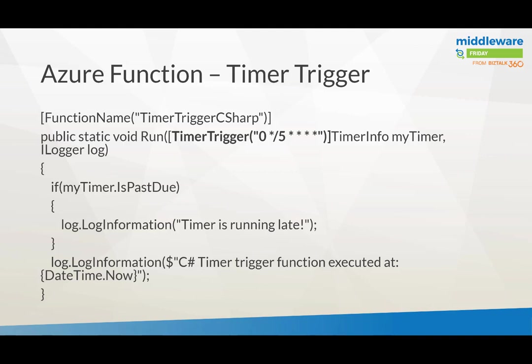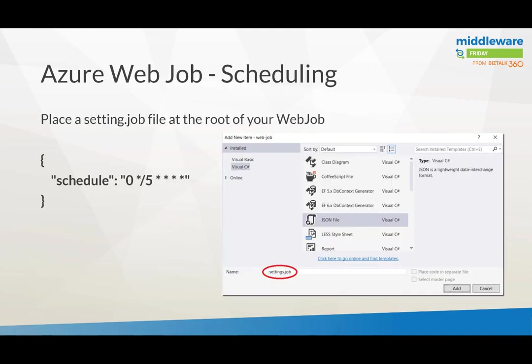In a Function, a timer trigger looks like this — within the brackets you specify the cron expression, and then that particular function will run on that schedule. Within a Web Job, you can also configure a cron expression. You add a file called settings.job to your Web Job and publish it to the cloud, and then you set the schedule using those cron expressions.